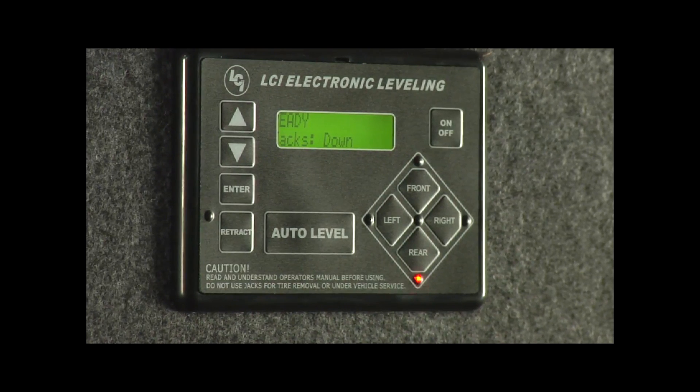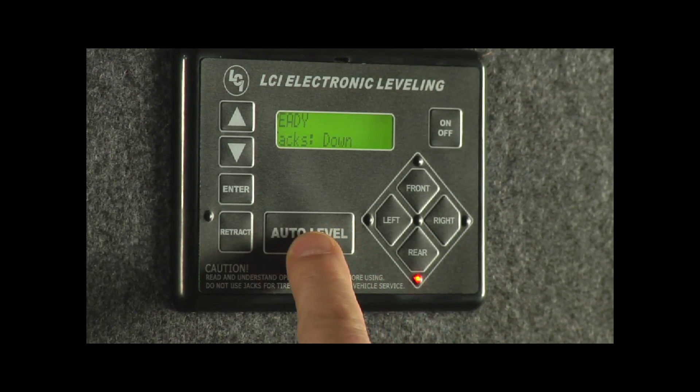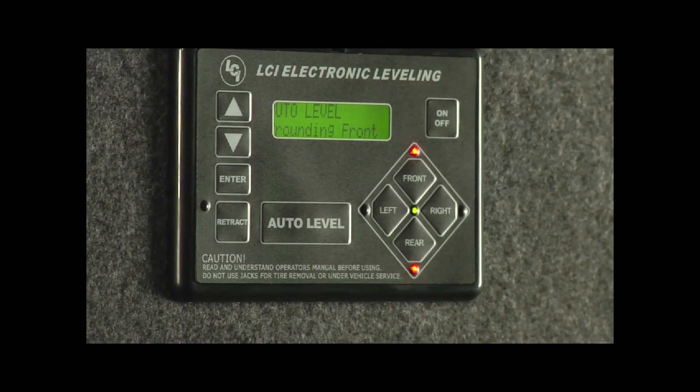Now we're raised up to where the truck is able to pull away. Our next step is to push auto level button. What it's going to do is it's going to check for auto level. It's going to adjust that.